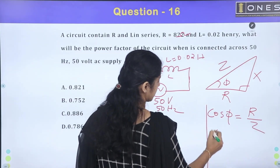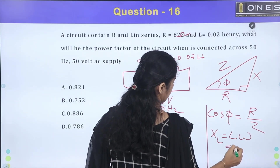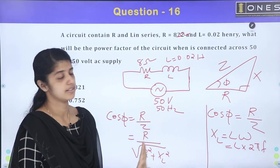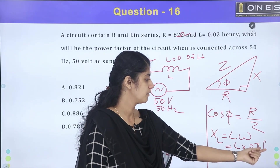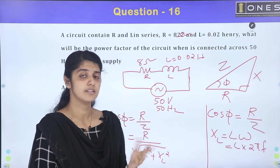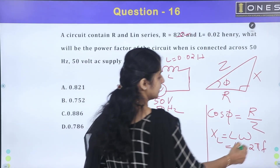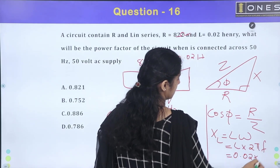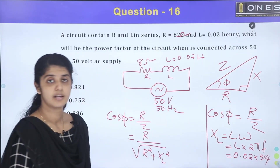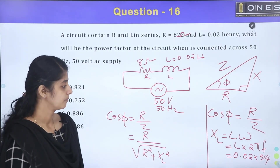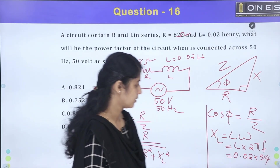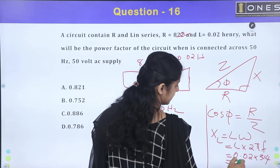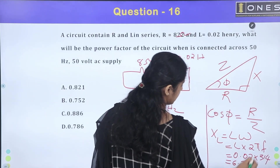XL is equal to L times omega, which is L times 2πf. The value of L is 0.02 and f is 50 Hz. So 2π into 50 equals 100π, and 3.14 into 100 is 314. Then 0.02 into 314 gives XL equal to 6.28 ohms.